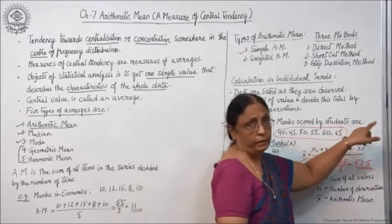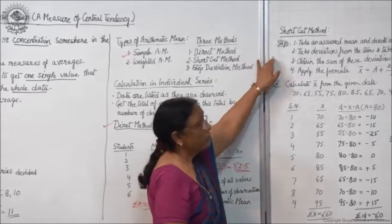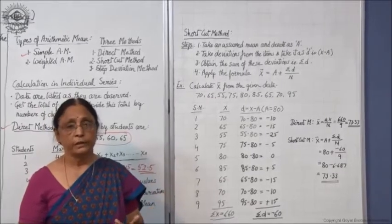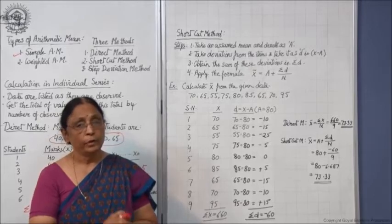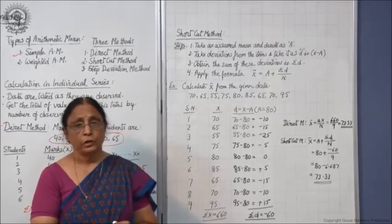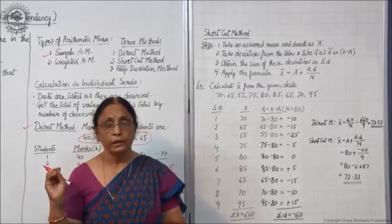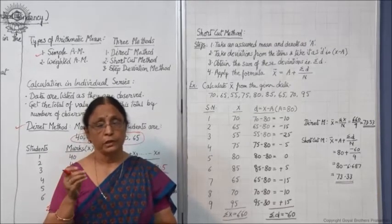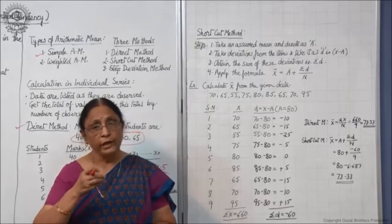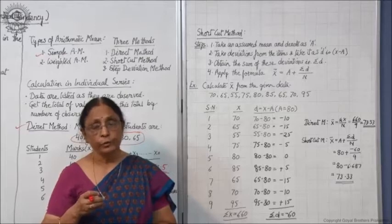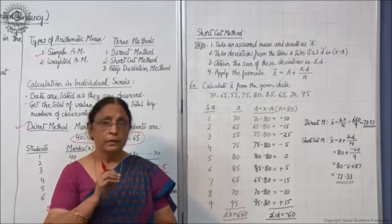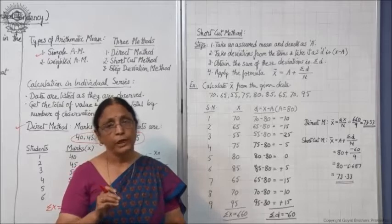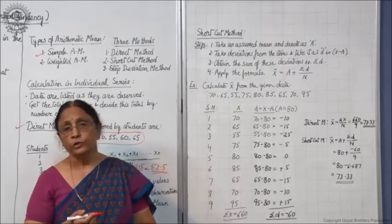Now we come to the next method — the shortcut method. There are three methods because if the number of items is not very large and the calculation is simple, you can apply the direct method. But if the figures are very large, in the thousands, adding up all the figures will be very difficult and time consuming. So we apply the shortcut method to make the calculation easier with fewer chances of errors.